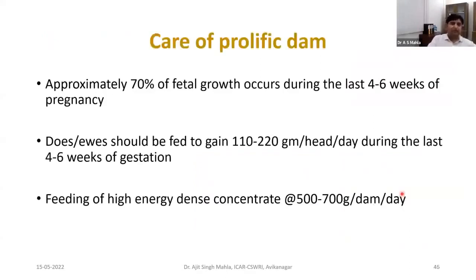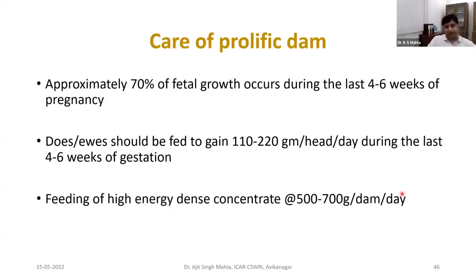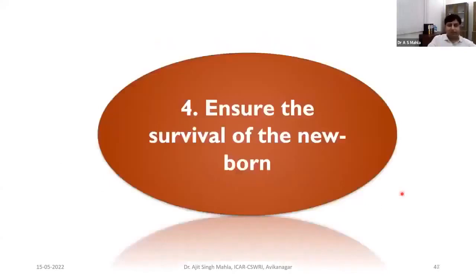To reduce embryonic loss, we need to care for prolific dams. Management during gestation of prolific sheep like Avishan requires focus on increased fetal nutritional requirements; we need to supplement nutrition during the last stage of gestation, as approximately 70% of fetal growth occurs during the last 4–6 weeks of pregnancy. With 2–3 fetuses in the uterus, there will be very limited feed intake, so we need to supplement high energy-dense concentrates — around 500–700 grams per dam per day depending on breed size and number of fetuses. It is better to perform ultrasonography on prolific dams like Avishan to determine fetal number so we can enhance nutritional supplementation accordingly.